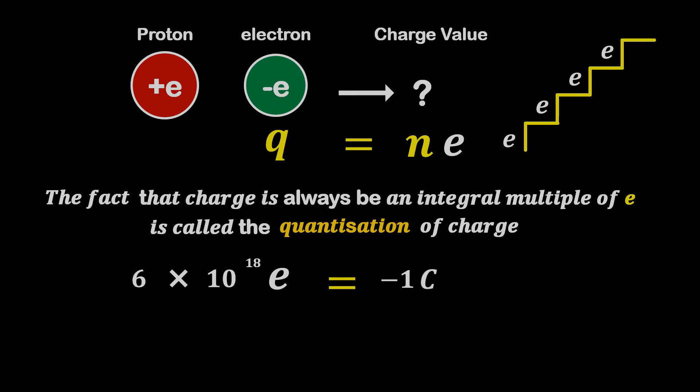In electrostatics, we rarely have to deal with charges of such high magnitudes, so we use smaller units such as microcoulomb, 10 to the power minus 6 coulomb, or millicoulomb, 10 to the power minus 3 coulomb.